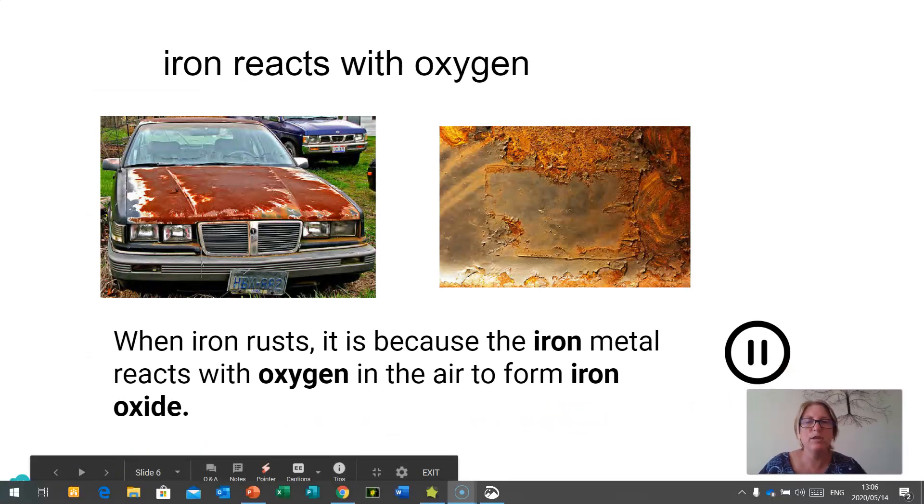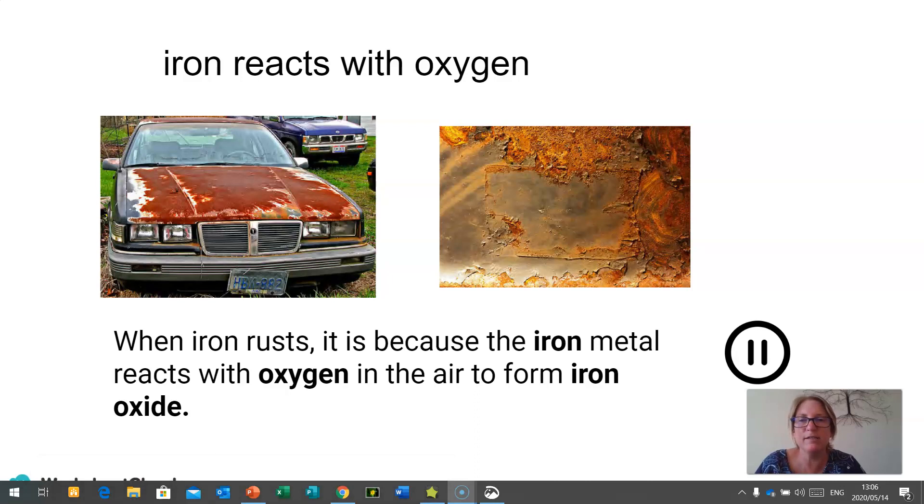So, here we have two diagrams. One is rust on the bonnet of a car, and one is rust on a piece of metal. So, this is showing you how iron reacts with oxygen. So, when iron rusts, it is because the iron metal reacts with oxygen in the air to form iron oxide. And you can see from these diagrams that iron oxide is a reddish-brown color. So, if you need to pause the video to get this statement down, you can.